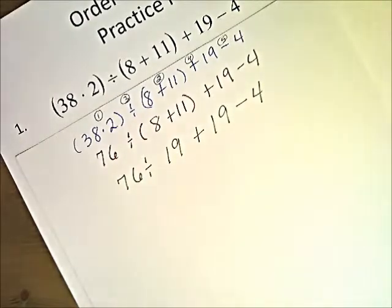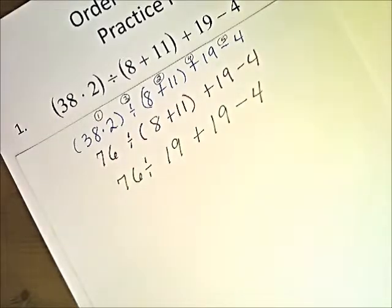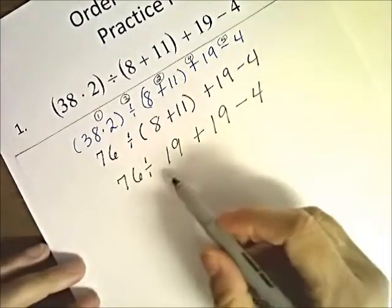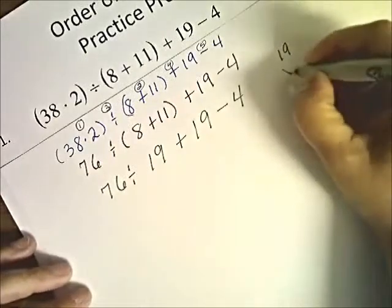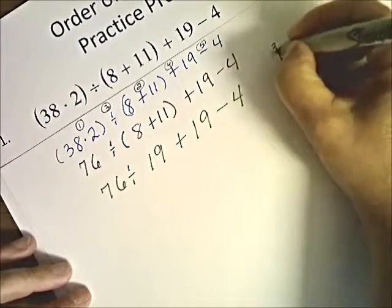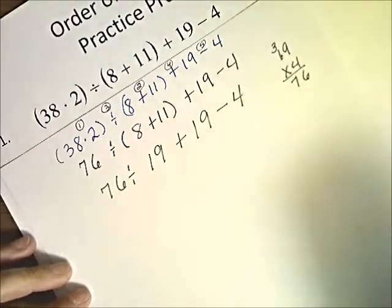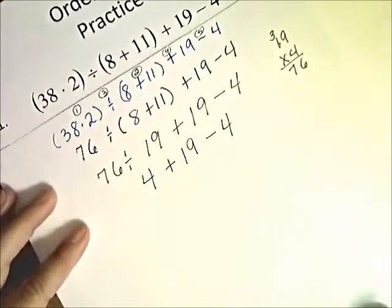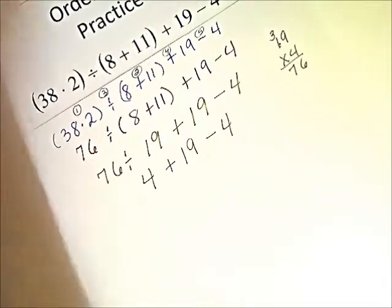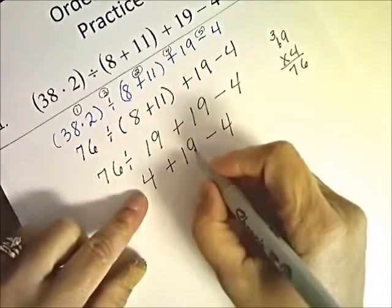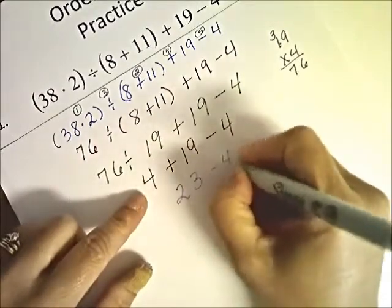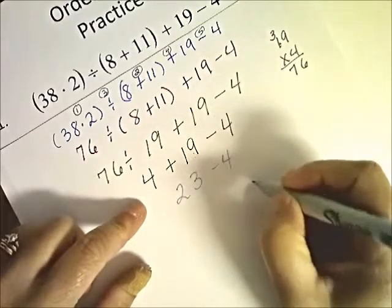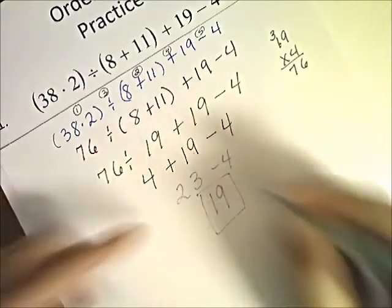Now we have 76 divided by 19 plus 19 minus 4. 76 divided by 19 — I'll work it out to the side: 19 times 4, 9 times 4 is 36, carry the 3, 4 times 1 is 4 plus 3 is 76. So 76 divided by 19 is 4. We have 4 plus 19 minus 4. Well, 4 plus 19 — add 1 to get 20, then 3 more is 23 minus 4. We just added 4, now we subtract that 4, so we're back at 19. That's our final answer.